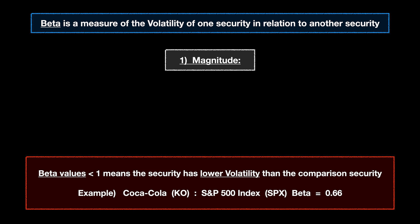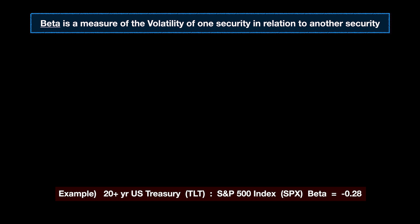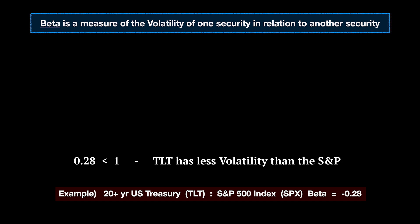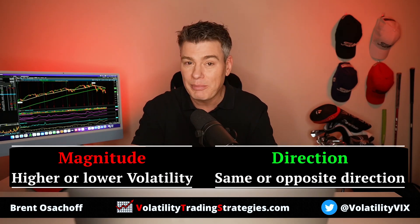Beta values less than one mean the security has lower volatility than the comparison security. An example would be Coca-Cola with a five-year beta to the S&P 500 of 0.66 — less than one, so it tends to have lower volatility. Importantly, when viewing beta as magnitude, the positive or negative sign is ignored. The 20-year U.S. Treasury TLT has a beta of minus 0.28; ignoring the minus sign, 0.28 is smaller than one, so TLT has lower volatility than the S&P 500. Magnitude applies on both positive and negative values.